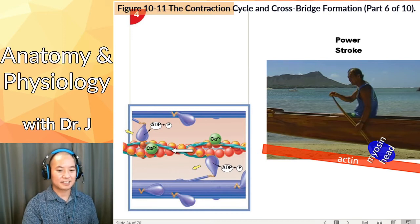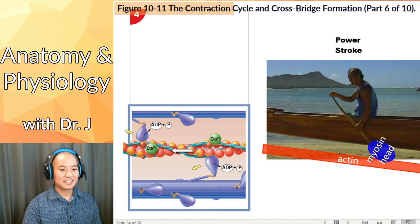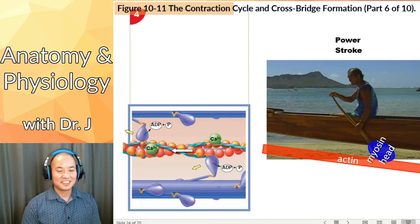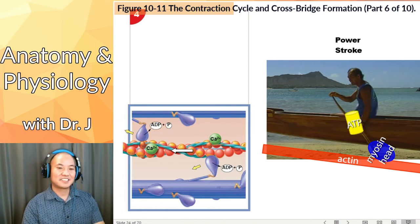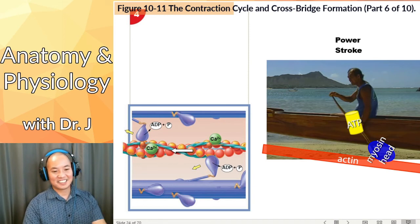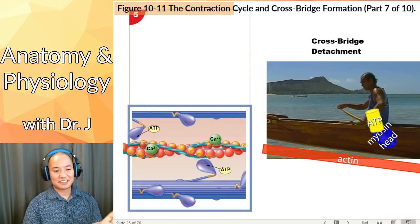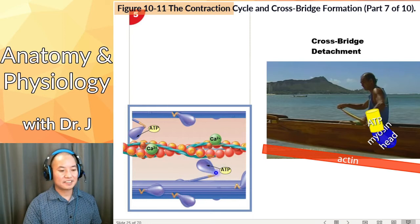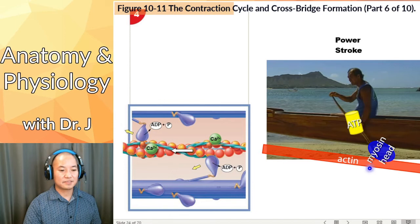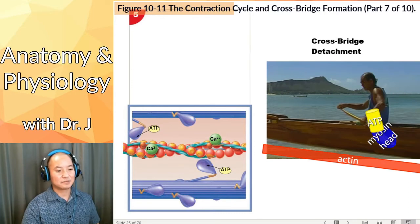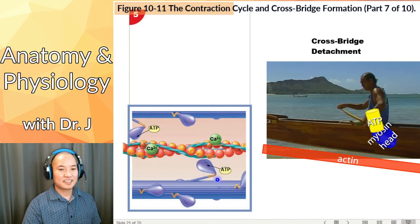After the power stroke, myosin needs energy to detach and reset — like a tired paddler needing an energy drink. That special energy drink is ATP. When ATP binds to a myosin head, it causes the myosin to detach from actin, undoing the cross-bridge. This is important because, just as you have to take your paddle out of the water to do another stroke, you have to detach myosin from actin to do another cross-bridge cycle and power stroke.